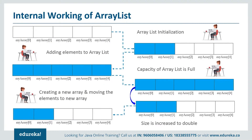Let's see the internal working of ArrayList. First, we create an empty array and then go on adding elements. Once the size of the array is full — that is, if the number of current elements is greater than the maximum size — we need to increase the size. Since the array size cannot be increased dynamically, what happens internally is a new array is created and the old array is copied to the new array. Automatically the size is doubled, allowing you to keep adding elements as needed.